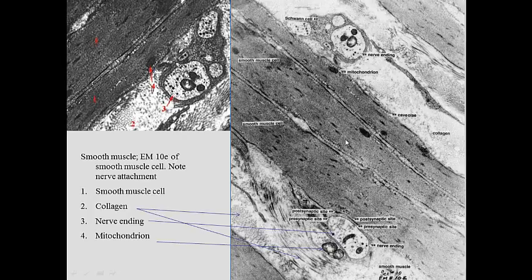We can also see smooth muscle being innervated by the nervous system. The different parts of the nervous system connect presynaptically and postsynaptically via an axon, with vesicles inside regulating the contraction of the smooth muscle.